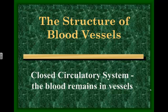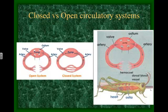We have what is called a closed circulatory system, meaning that our blood stays in blood vessels the whole time as it's going through the body. There are actually two kinds of circulatory systems in organisms. There is closed, which we have, and there's open. Insects are a good example that have an open circulatory system. In a closed system, blood remains in the blood vessels. In an open system, there's a gap where the blood does not remain — it leaves the circulatory system and pours out.